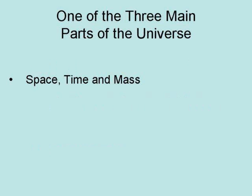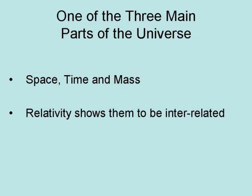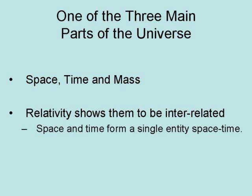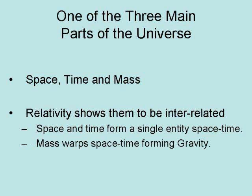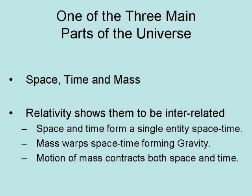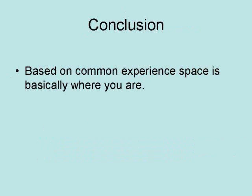Space is one of the three main parts of the universe: space, time, and mass. Relativity shows that they are interrelated. Space and time form a single entity called space-time. Mass warps space-time, forming gravity. And the motion of mass contracts both space and time.